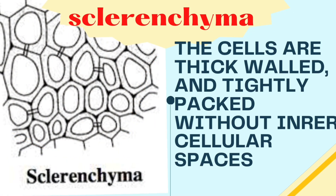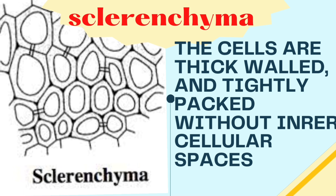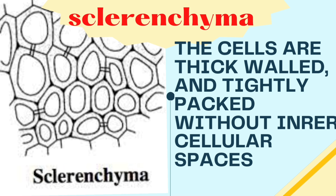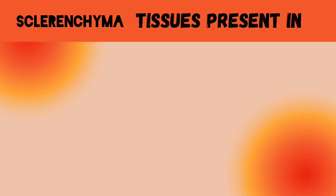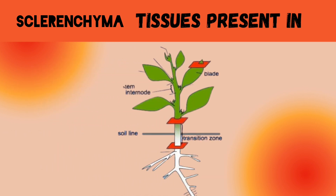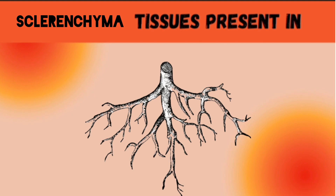The third type of ground tissue is sclerenchyma. Sclerenchyma tissues are thick-walled and tightly packed without spaces. These sclerenchyma cells are thick-walled and present throughout the plant body. Almost the entire plant body is covered by them, including the roots.